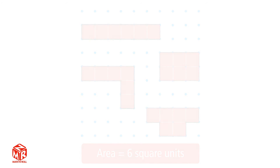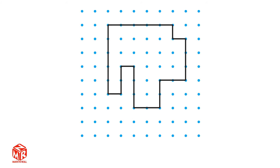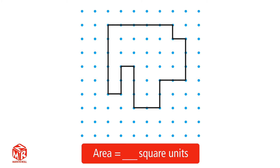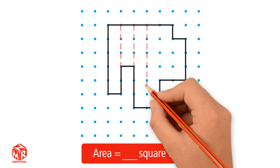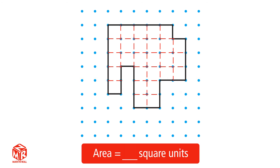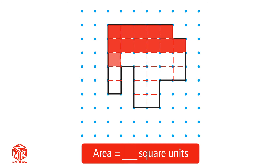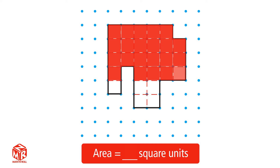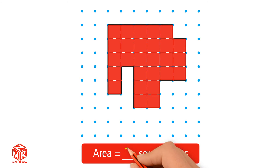Let's try an example. Find the area of this figure. Draw lines to show each unit square in the figure, then count the number of unit squares to find the area. The area of this shape is 27 square units.